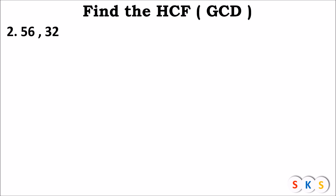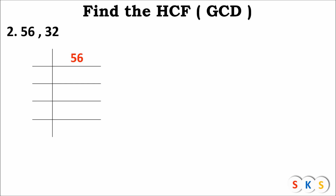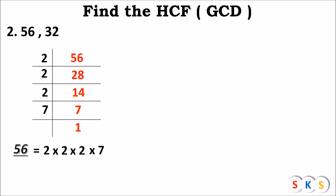Question 2: Find SCF of 56 and 32. First, find prime factors of both numbers. For 56: divide by 2 to get 28, divide 28 by 2 to get 14, divide 14 by 2 to get 7, divide 7 by 7 to get 1. Therefore, the prime factor of 56 is 2 × 2 × 2 × 7.